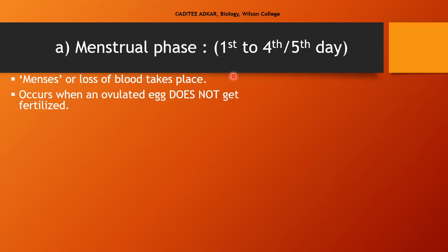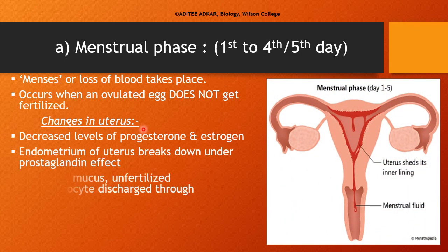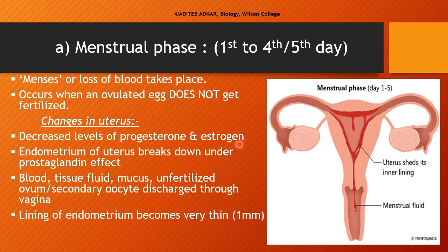The first phase is the menstrual phase, and day 1 of this phase is considered the beginning of the menstrual cycle. The menstrual phase begins when the egg released by the ovary does not get fertilized. Because of the decreased levels of progesterone and estrogen, the endometrium of the uterus breaks down due to the prostaglandin effect. Blood, tissue fluid, and the unfertilized ovum are all discharged through the vagina — this loss of blood is known as menstruation or menses. The endometrial lining now becomes very thin.